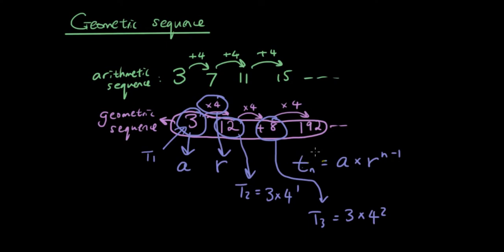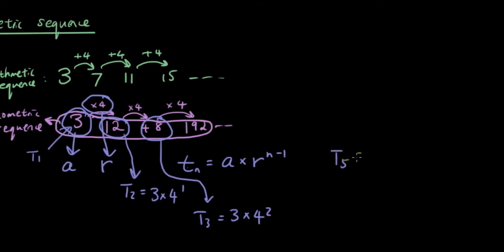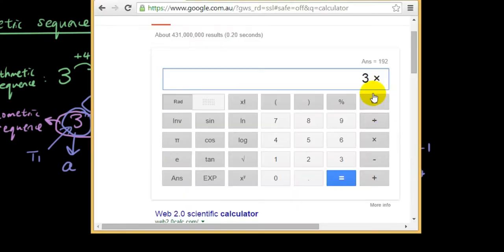So if somebody said, okay, what is the fifth term going to be in this sequence? So we can easily use the formula. So t_5 is equal to a times r to the power of 5 minus 1. Right, using this formula here, so t_5 is equal to 3 times 4 to the power of 4. So putting that in the calculator, 3 times 4 to the power of 4.